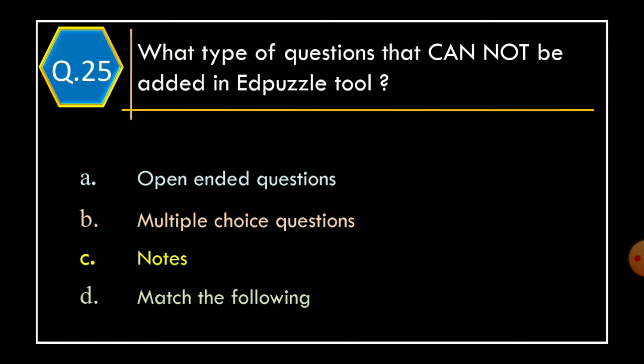Question 25: What type of questions cannot be added in the EdPuzzle tool? Option A: Open-ended questions. Option B: Multiple choice questions. Option C: Notes. Option D: Match the following. And the correct option is Option D: Match the following.